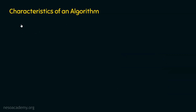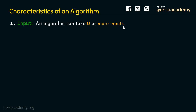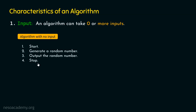The first characteristic of an algorithm is input. An algorithm can take zero or more inputs. It is possible for an algorithm to receive no inputs at all, or it may receive more than one input. An algorithm is said to be valid in all these cases. For example, this algorithm takes no input — it generates a random number and outputs that random number, without receiving any input from the user.